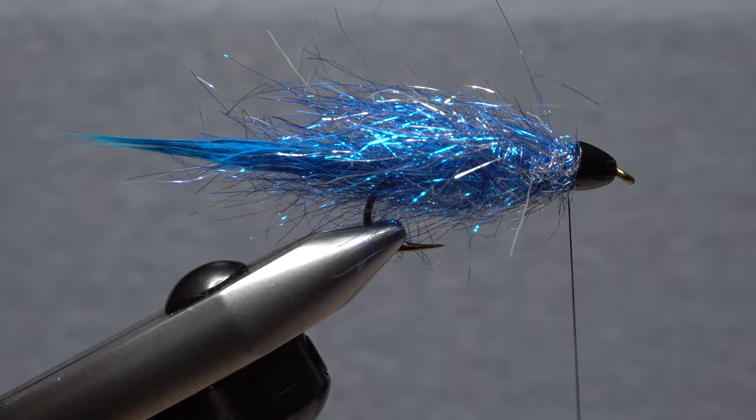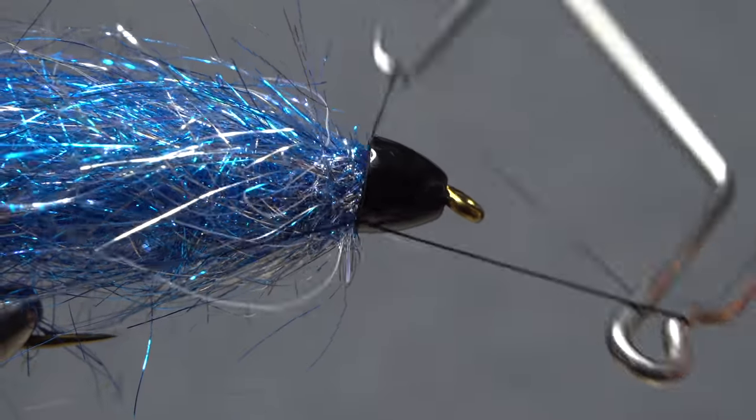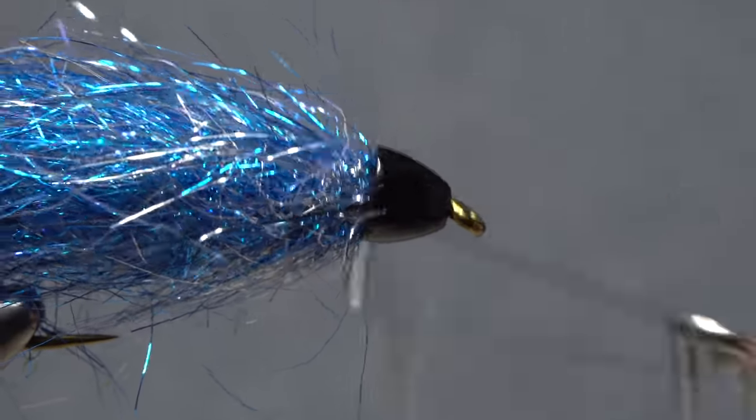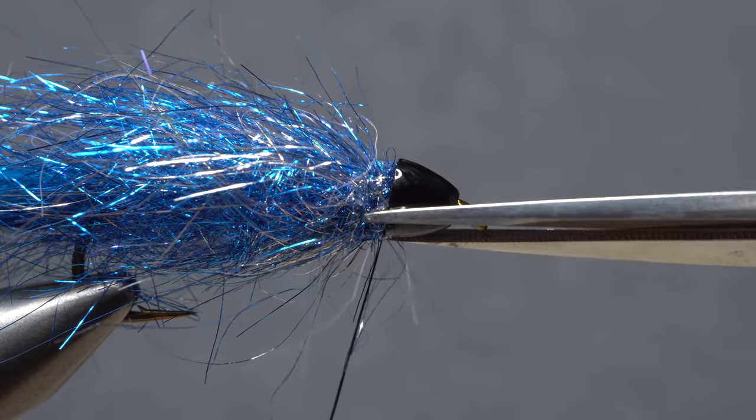Your frozen fox should now look something like this. Pick up your whip finish tool and use it to do a 5 or 6 turn whip finish right at the back edge of the cone. Then seat the knot well and snip your tying thread free.